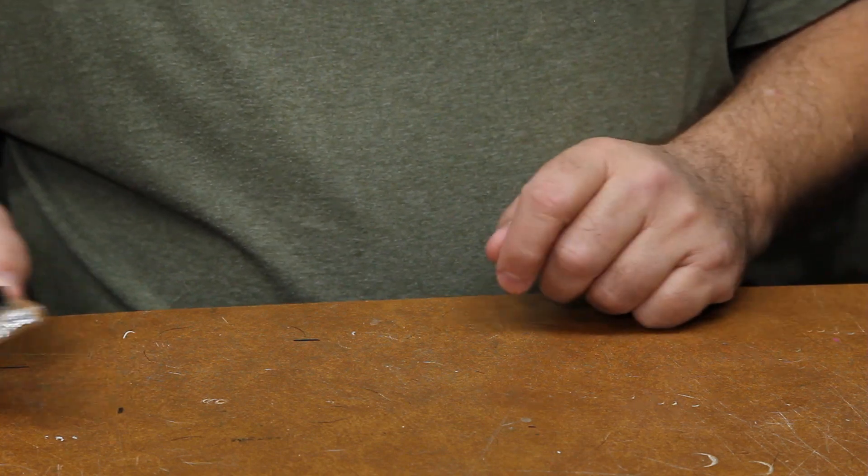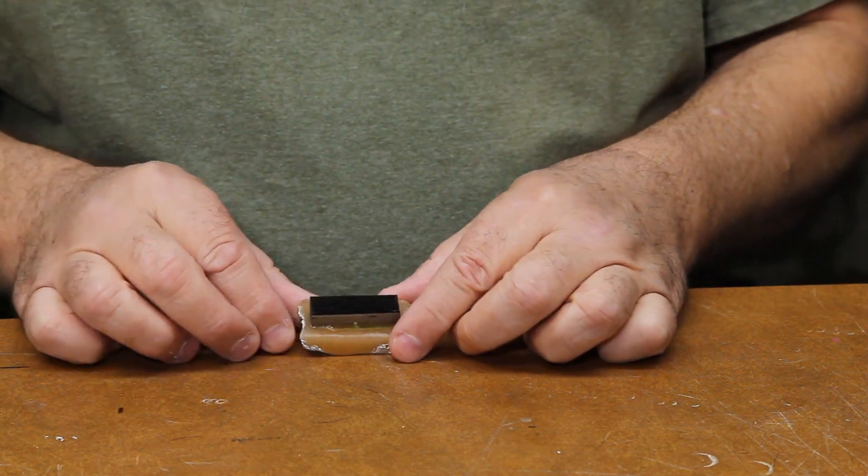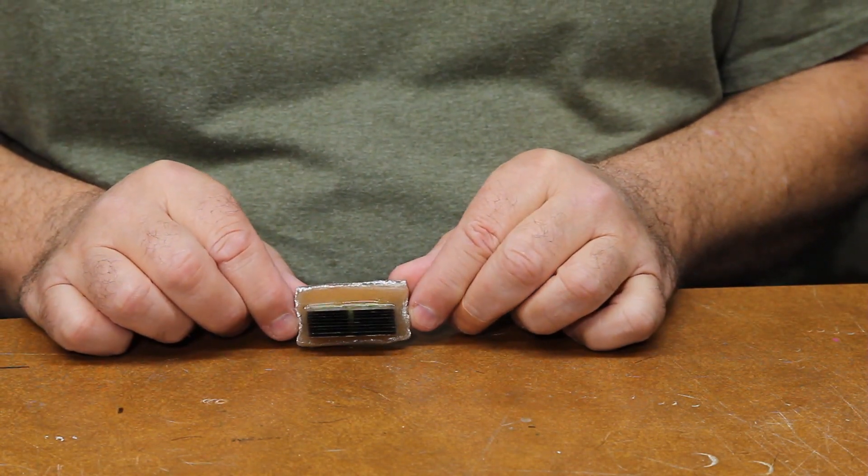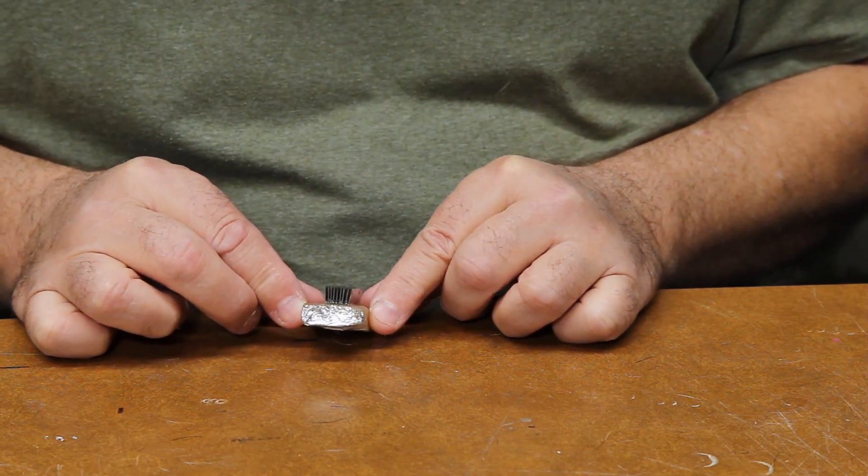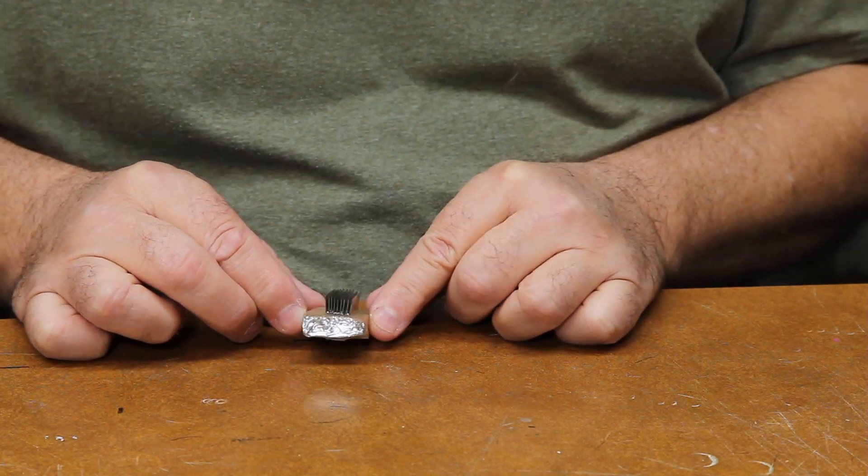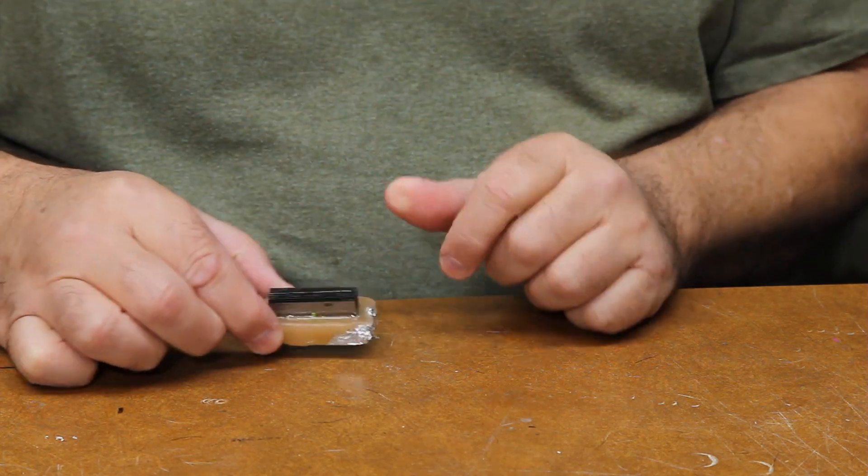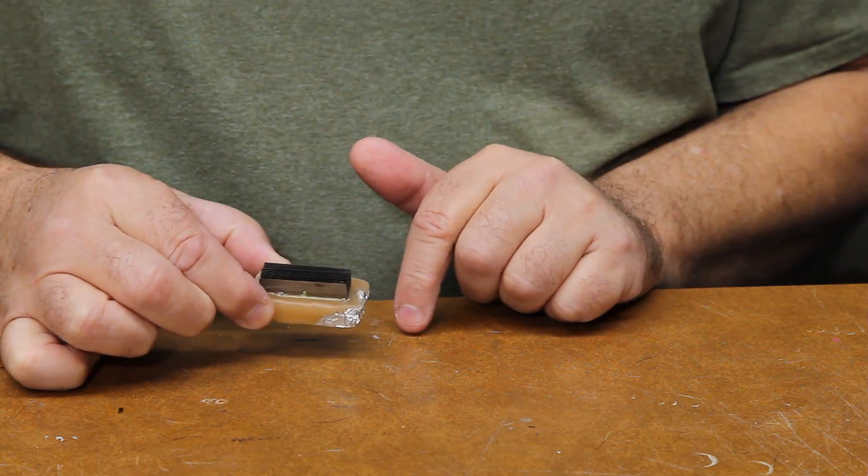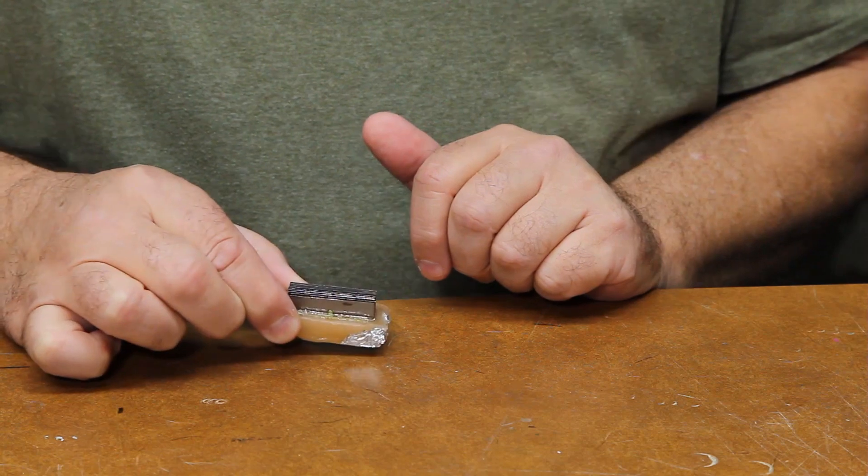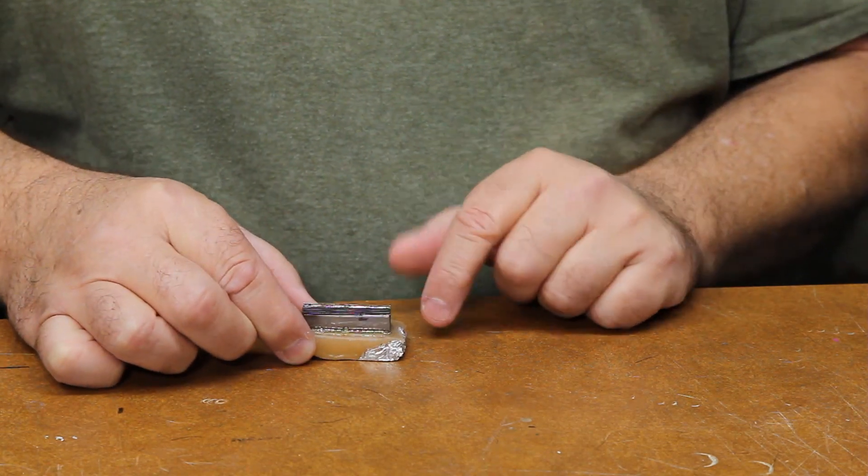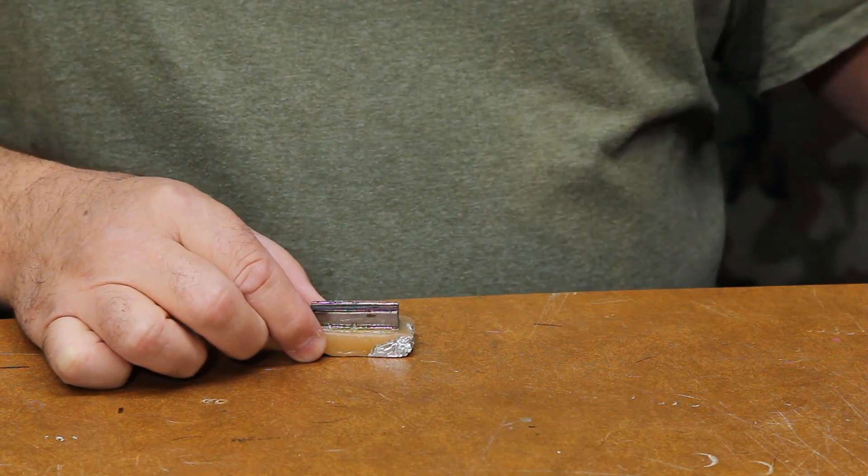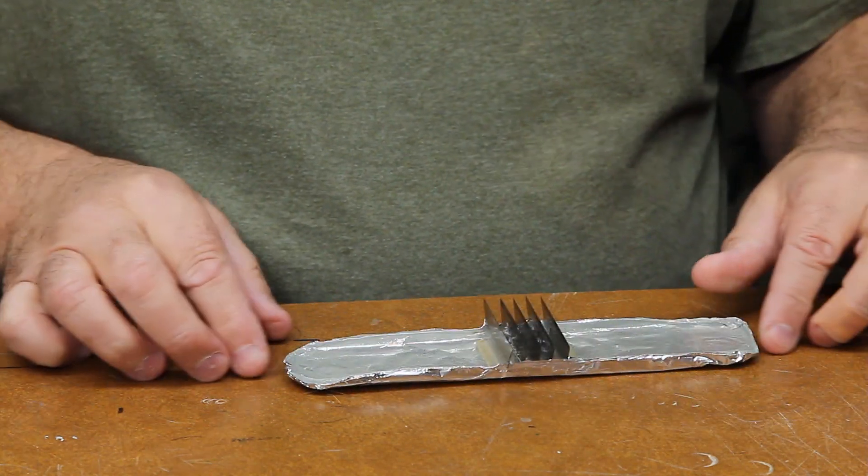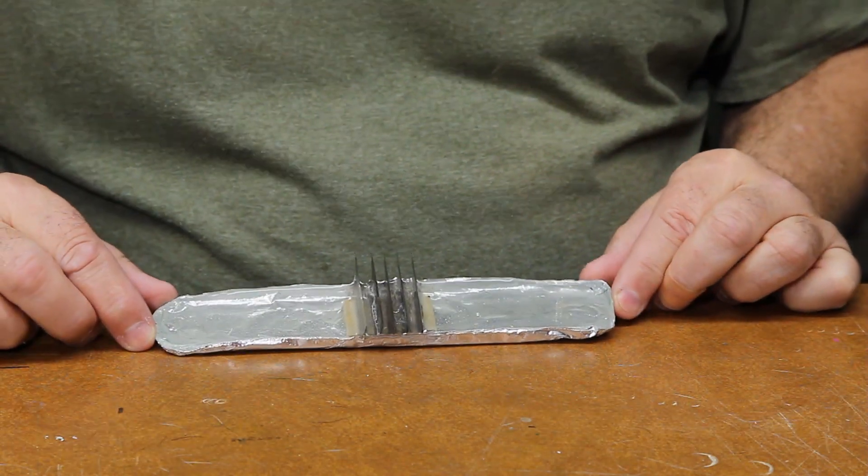People that are fans of my channel will recognize this little device. I made this and showed you how to use it to cut mylar for mylar strips for flashing your flies. I've had people make ones like this and tell me they tried to cut fur with it but it won't cut fur. It's a different technology.